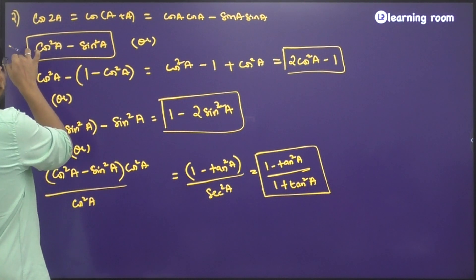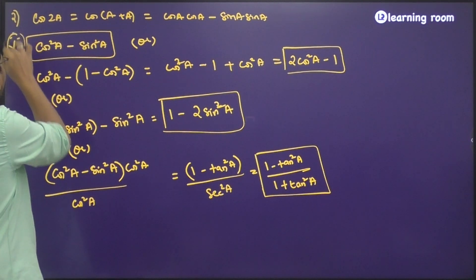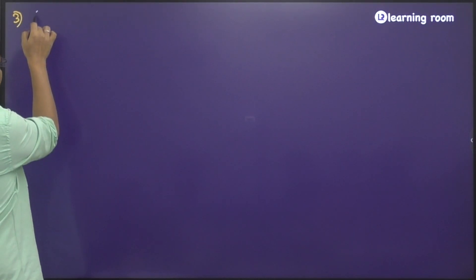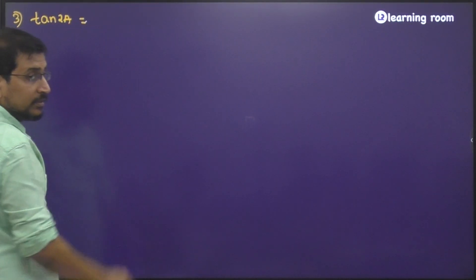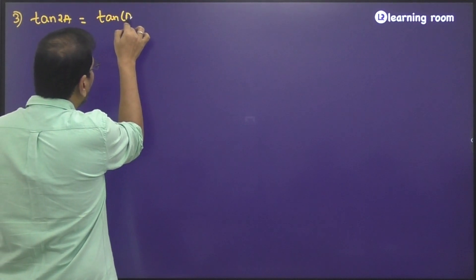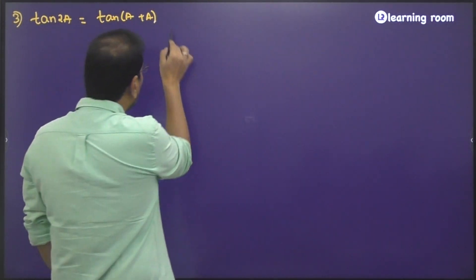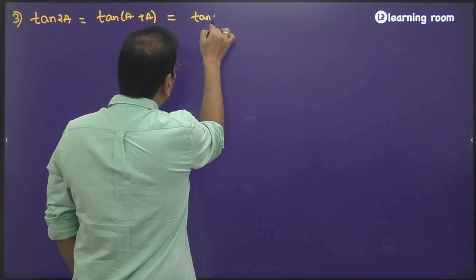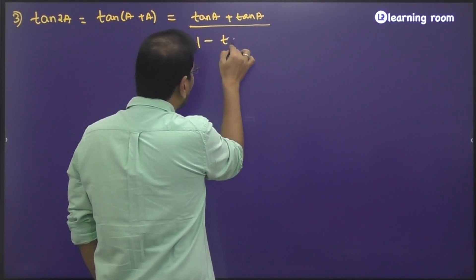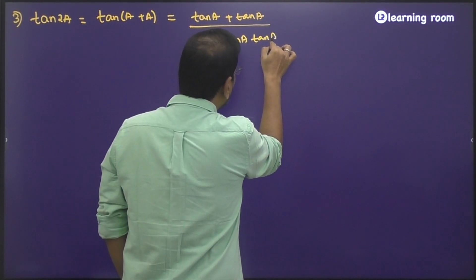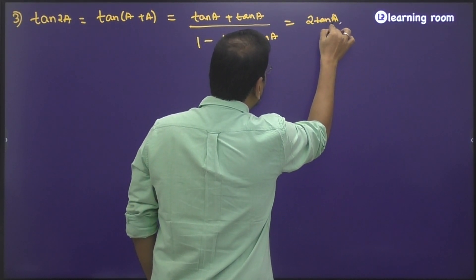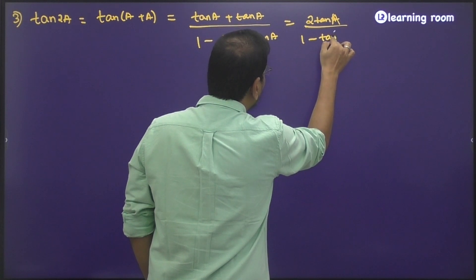Cos 2a is the most important of all, because this formula can be manipulated and you can convert it into many other identities as well. I would suggest cos 2a is very, very important for you to remember.